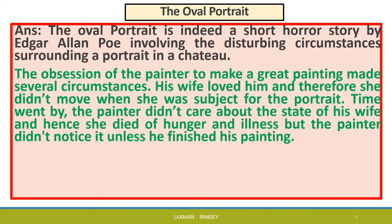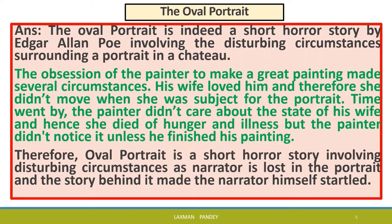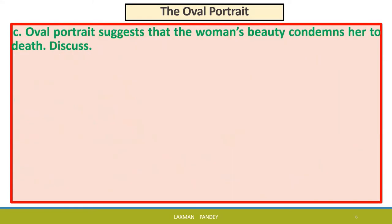The obsession of the painter to make a great painting created several disturbing circumstances. His wife loved him and therefore she did not move when she was the subject for the portrait. Time went by and the painter did not care about the state of his wife, and hence she died of hunger and illness, but the painter did not notice it unless he finished his painting. Therefore, 'The Oval Portrait' is a short horror story in which the narrator is lost in the portrait and the story behind it. The overall portrait suggests that the woman's beauty condemned her to death.